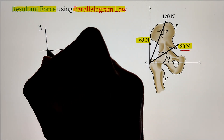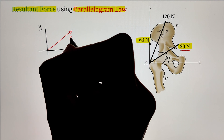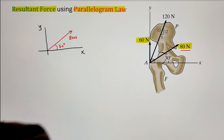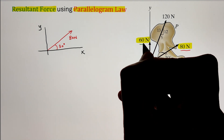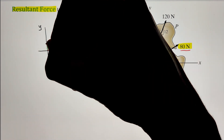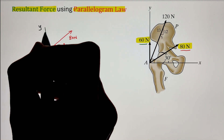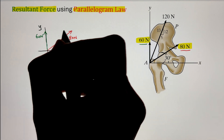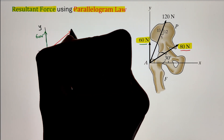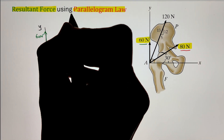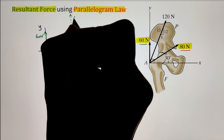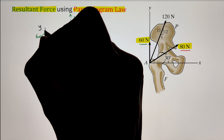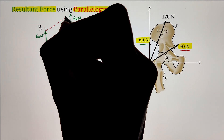To start, let us consider our first force of 80 Newton acting at an angle of 30 degrees from the horizontal x-axis and the second force of 60 Newton acting along the y-axis. Drawing that on the xy-axis, we can start developing our parallelogram by translating our force of 60 Newton to the head of the 80 Newton force. Similarly, we translate the force of 80 Newton by moving its tail to the head of the 60 Newton force, developing our parallelogram.